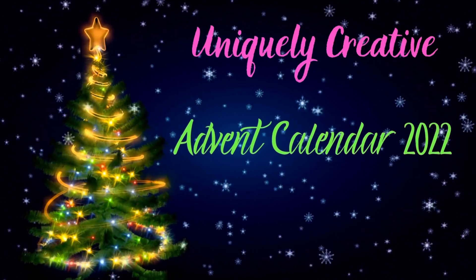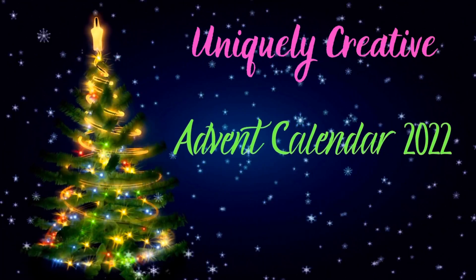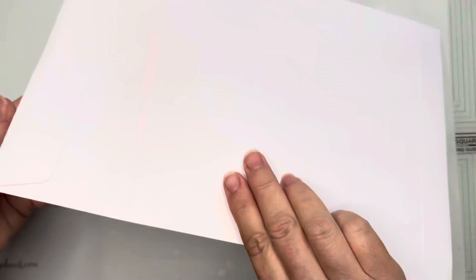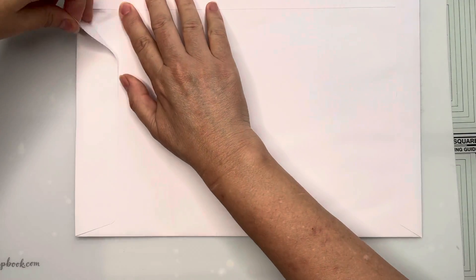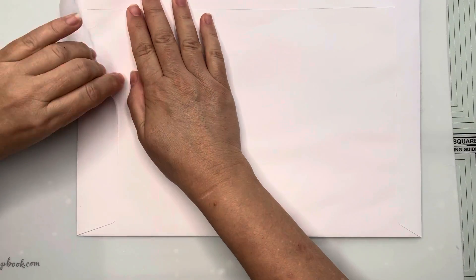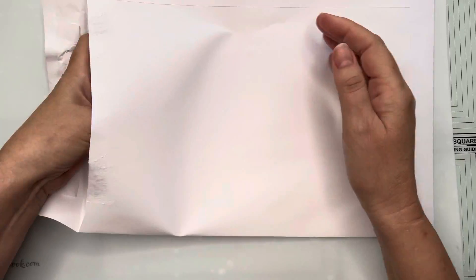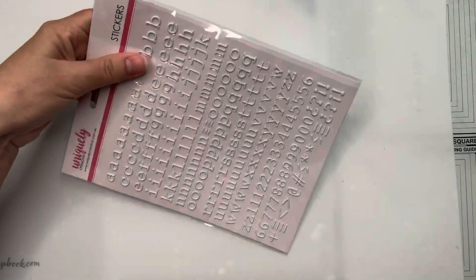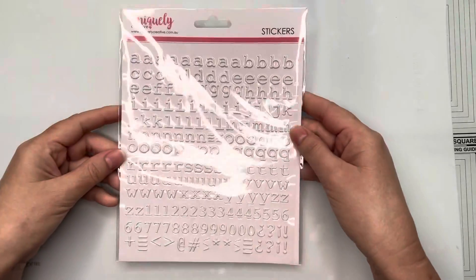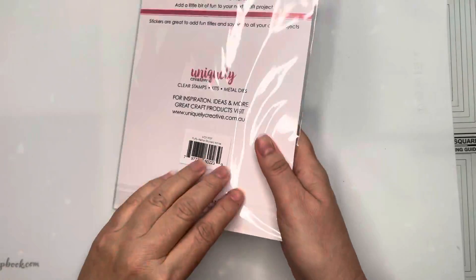Hello crafty friends, day three of the advent calendar. Let's get the very large envelope and have a look what we have inside today. Just peeling back that little flap on the envelope and we have got some puffy alphabets.